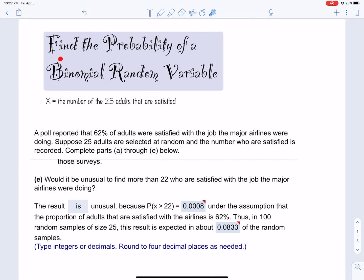Alright, I want to show you guys how to find the probability of a binomial random variable. We're going to be working on part E, but let's read what's going on. A poll reported that 62% of adults were satisfied with the job the major airlines were doing. Suppose 25 adults are selected at random and the number who are satisfied is recorded.